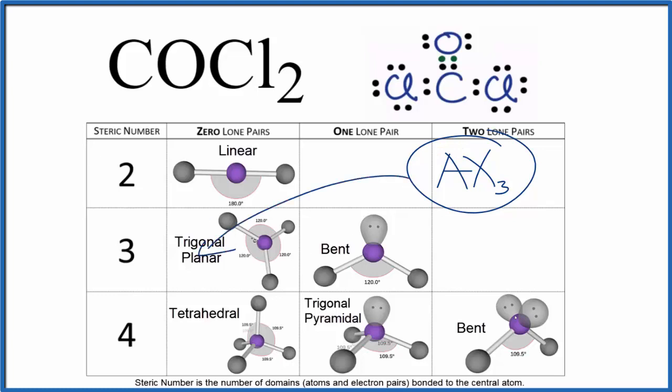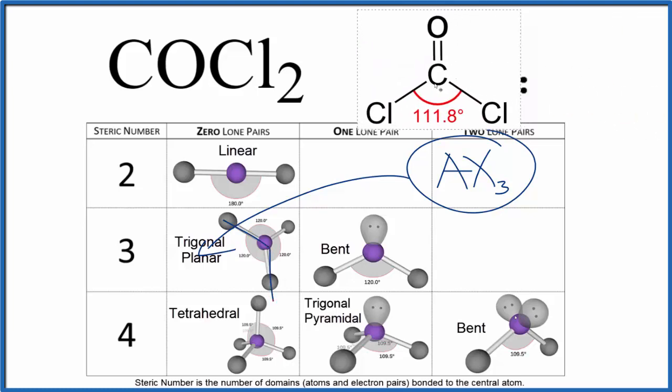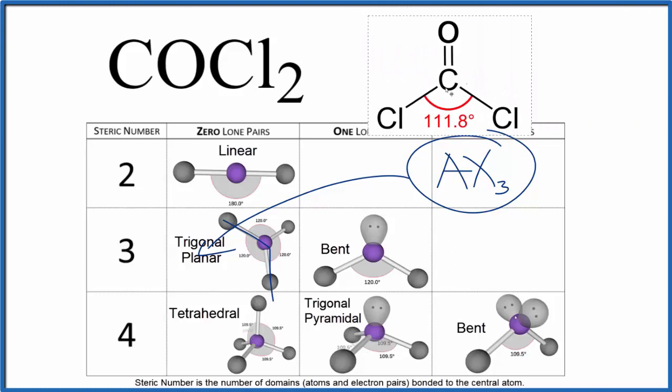Note that when we talk about the bond angles here, 120 degrees is the ideal bond angle. The actual bond angles are a little different because of the difference in the oxygen and chlorine atoms. The actual bond angle between the chlorines is 111.8 degrees—close,